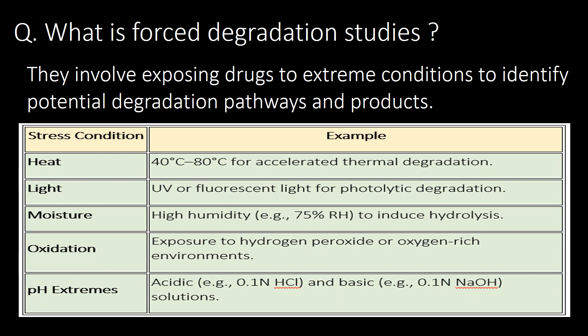What are forced degradation studies? Forced degradation studies involve exposing drugs to extreme conditions to identify potential degradation pathways and products. The five important stress conditions are: first, heat (40–80°C) for accelerated thermal degradation; second, light (UV or fluorescent) for photolytic degradation; third, high humidity (e.g., 75% relative humidity) to induce hydrolysis; fourth, oxidation — exposure to hydrogen peroxide or oxygen-rich environments; and fifth, pH extremes — acidic or basic conditions.